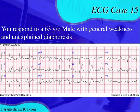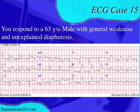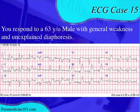First, we want to identify the rhythm. The best place to do that on this tracing is the precordial leads. Looking there, we can see P waves — right there, right there, right there — no extra P waves, and the PR interval looks pretty constant. It looks like we have a sinus rhythm: regularly regular, rate's not too bad, narrow complex for the most part.